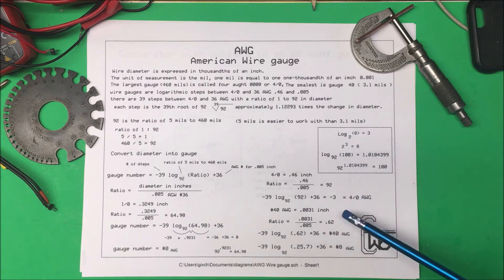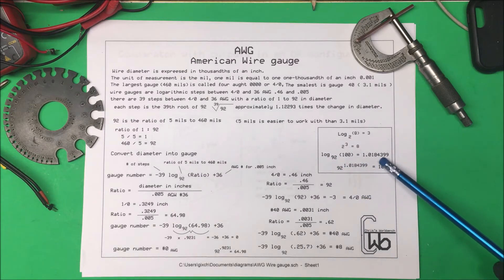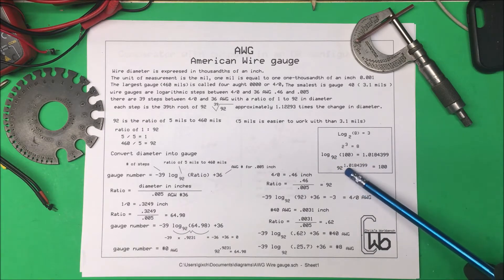That's all it is with the logarithm and it works for any base. Log base 92 of 100 equals this number and if you take 92 to that power it equals 100.